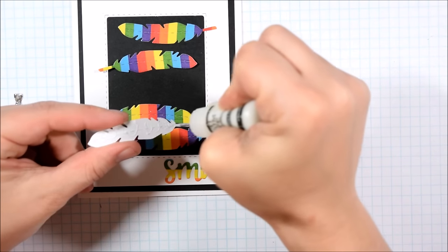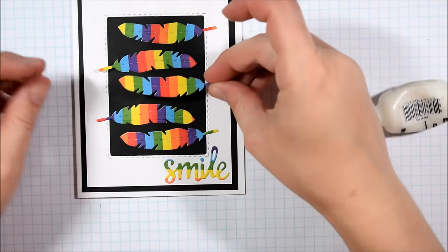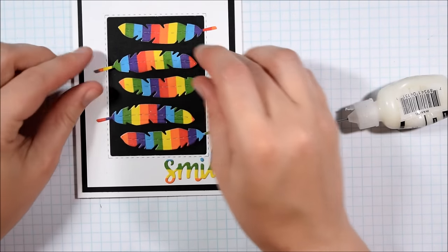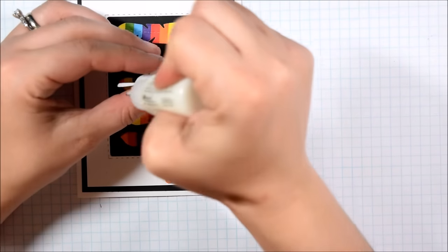Something else that I had considered was to pop up the pieces—or say the feathers—on some foam tape for a little bit of extra dimension, but I wanted them to match the smile.